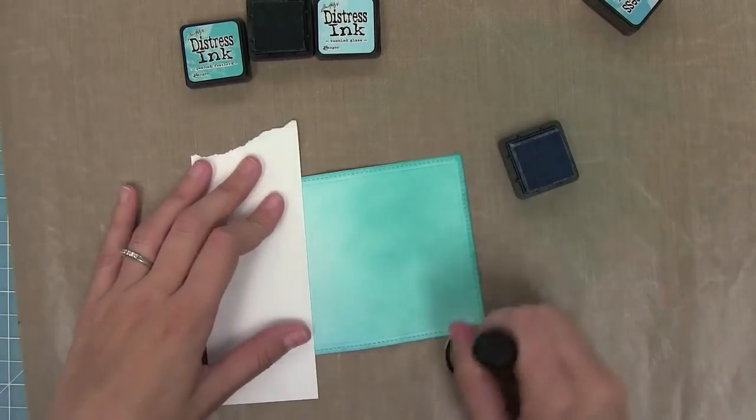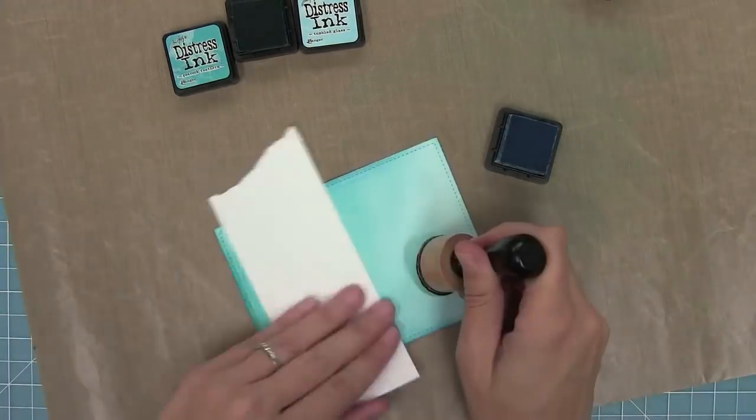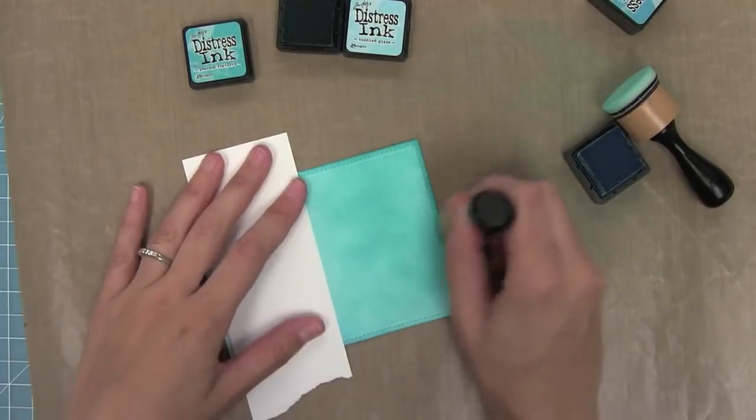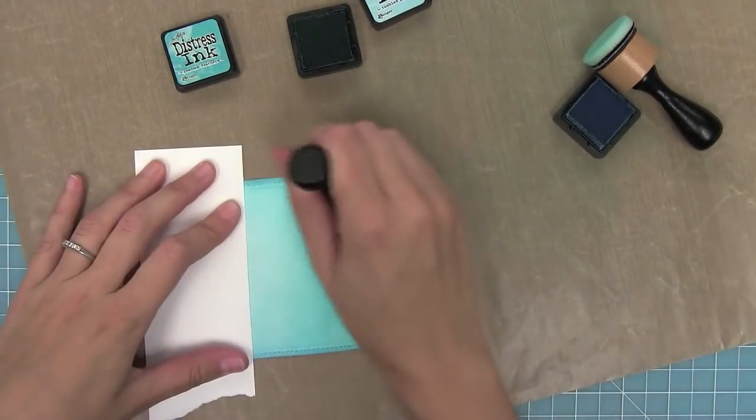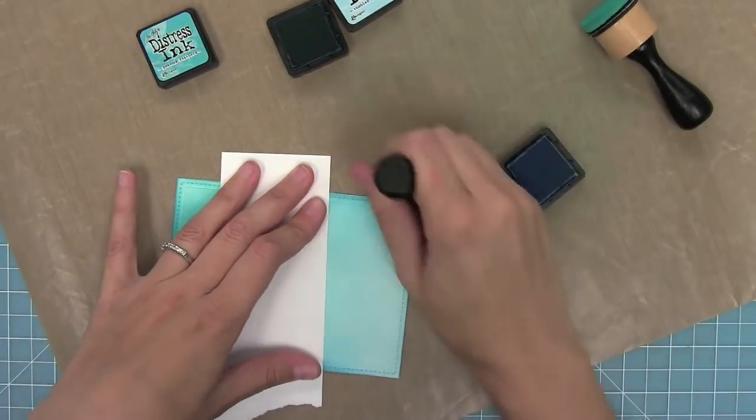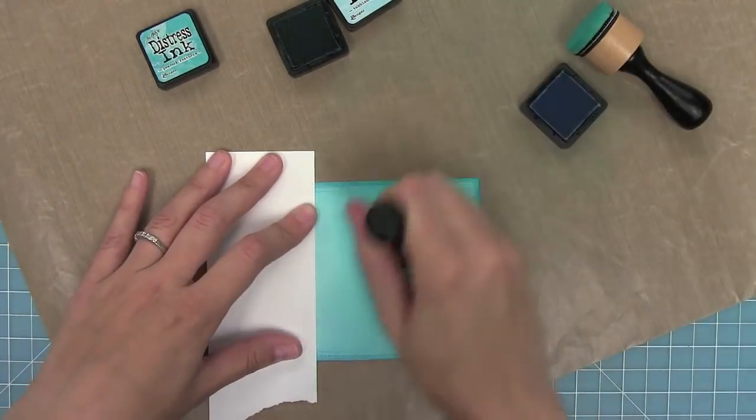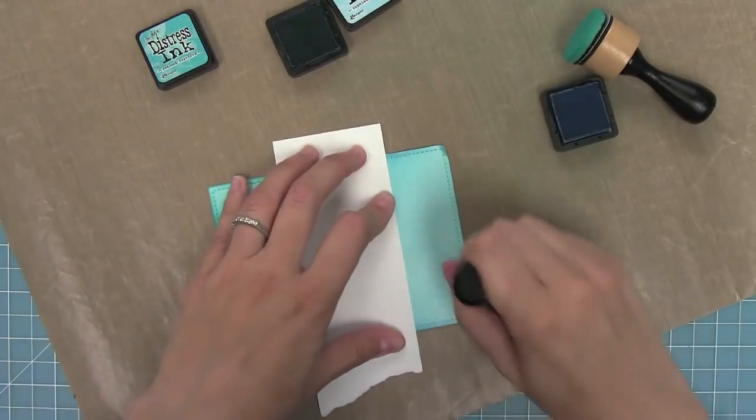To make sure these colors blend together I'm now taking tumbled glass and going over the area where those two colors meet. After I've done that with the tumbled glass, I'm going to switch to peacock feathers and go over that area once again to make sure it's nice and blended. I'm going to continue to switch back between tumbled glass and peacock feathers until that area is really a nice seamless blend.